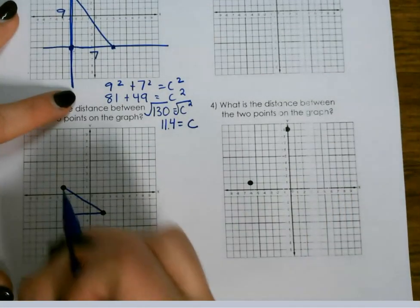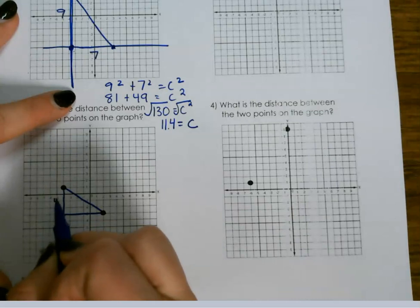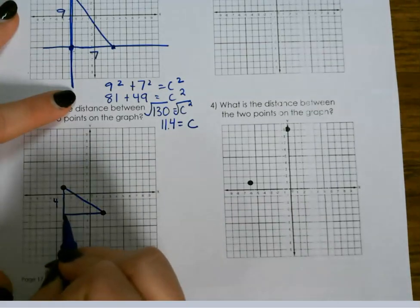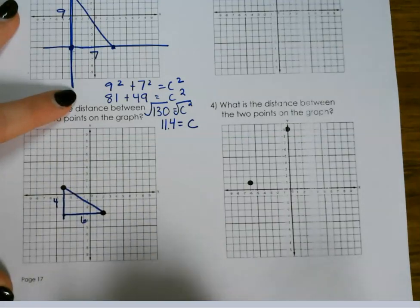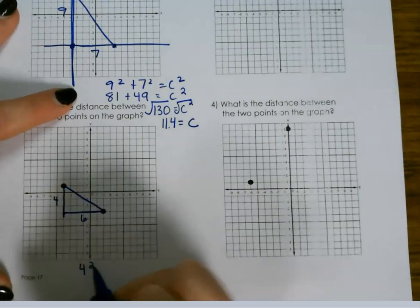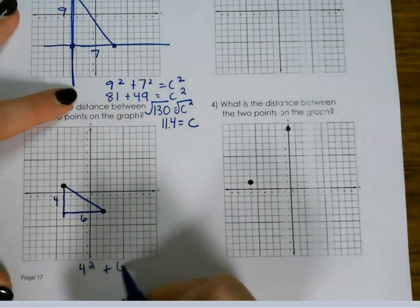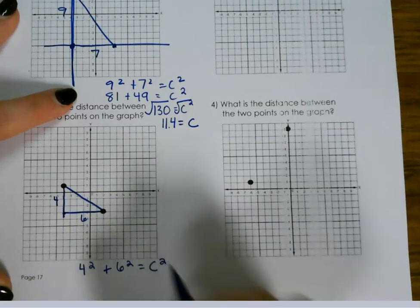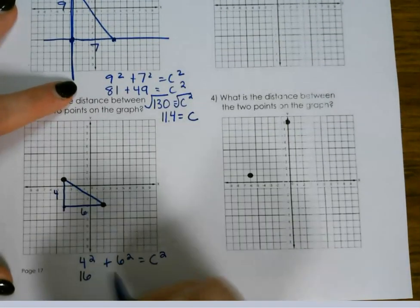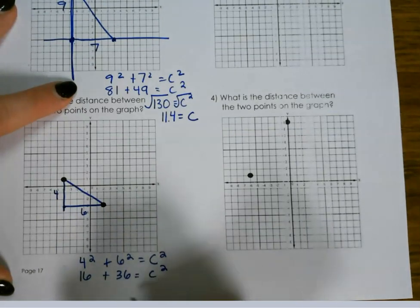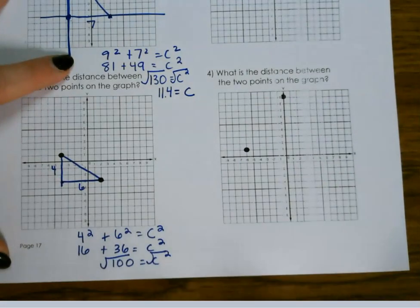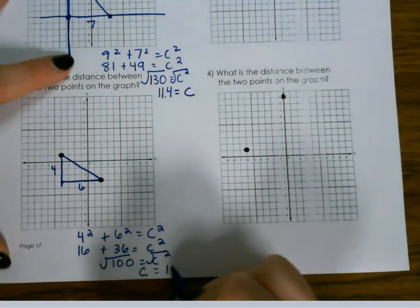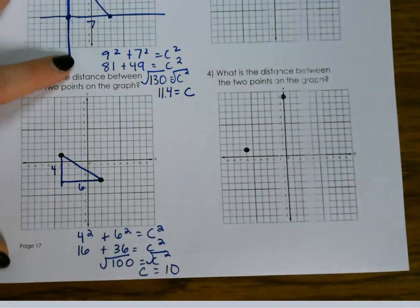So here I have a point at 1. This one's at 3, so that would be a distance of 4. This one would be at negative 4 and 2, which would be a distance of 6. So a squared plus b squared equals c squared. So 16 plus 36 is 100. So the square root of 100 is 10 for my final answer on that one.